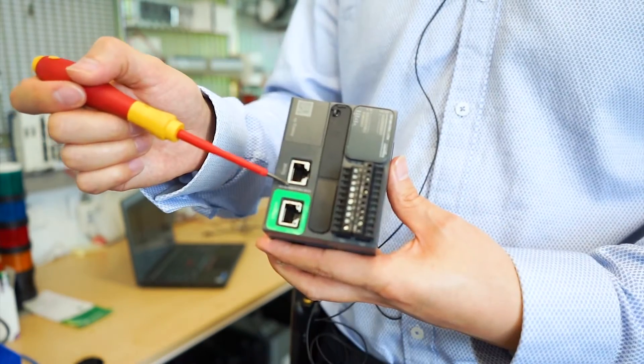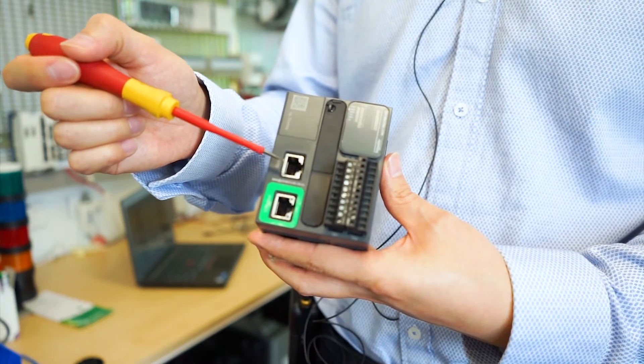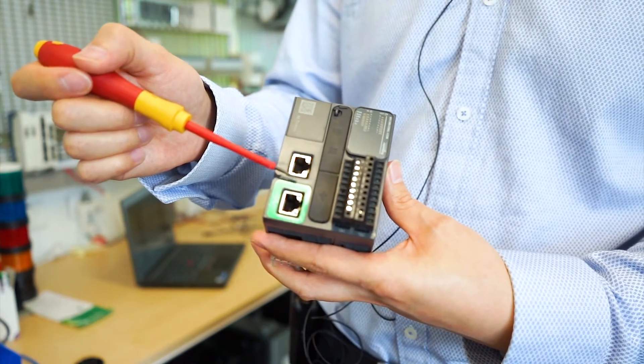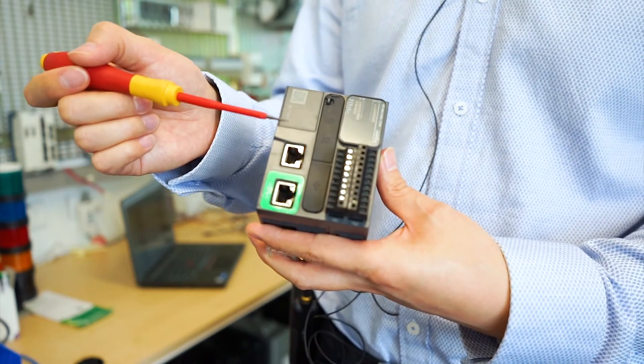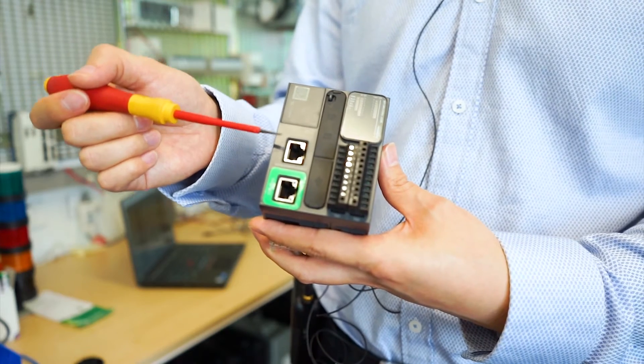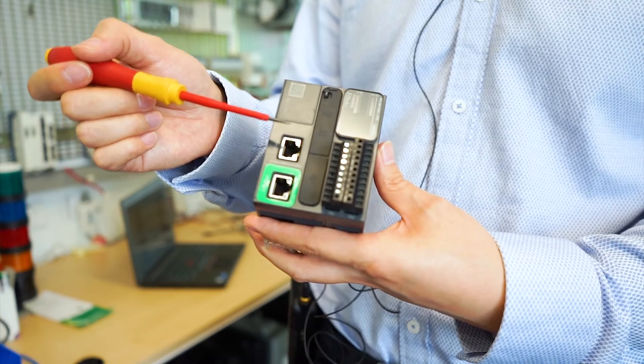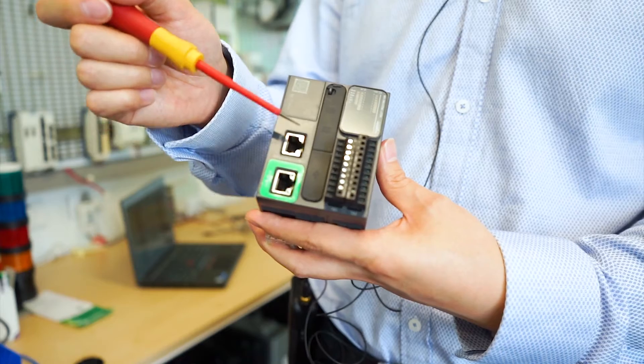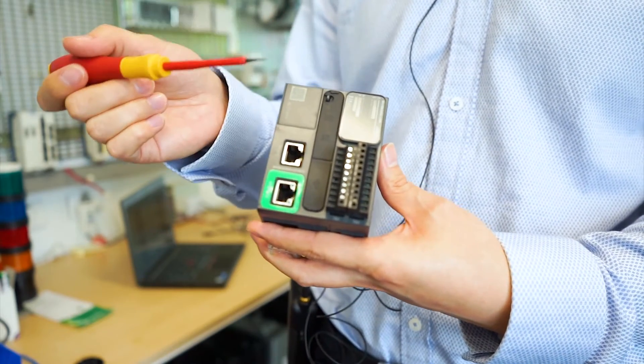As you can see, we have this MAC address. The default IP address with one, two, three, four, five, six - six part hexadecimal numbers. The default IP address will be 10.10 dot the last two hexadecimal numbers translated to the decimal number.